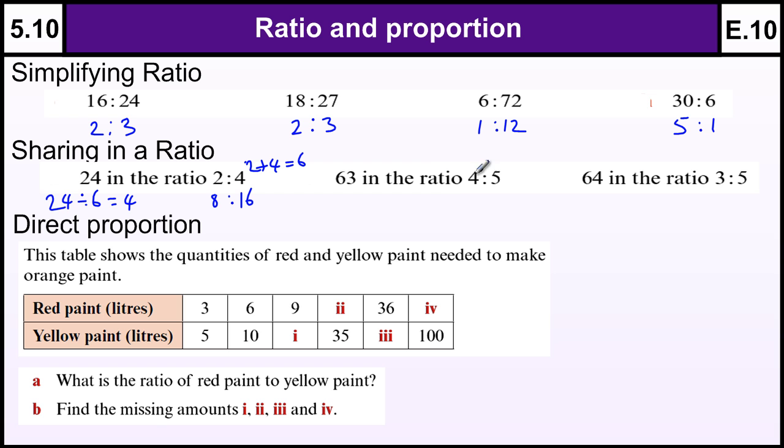And like this one, 4 plus 5 is 9. 63 divided by 9 is 7. 7 times 4 is 28. 7 times 5 is 35.